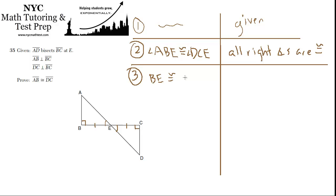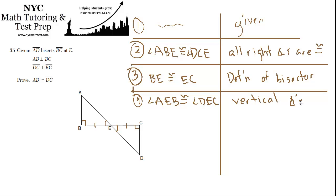BE is congruent to EC, and that's based on the definition of a bisector. Okay, so we've established that BE is congruent to EC. We've established that angle B is congruent to angle C, because all right angles are congruent. And now we have to establish that angle AEB is congruent to angle DEC, because they are vertical angles.